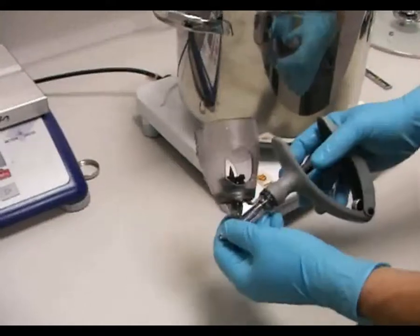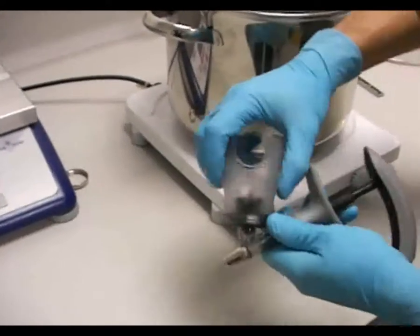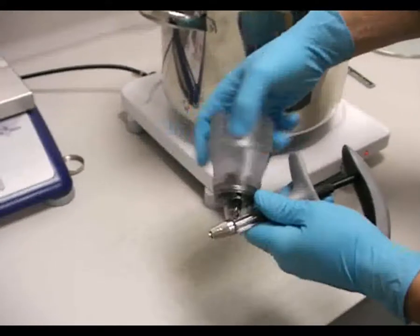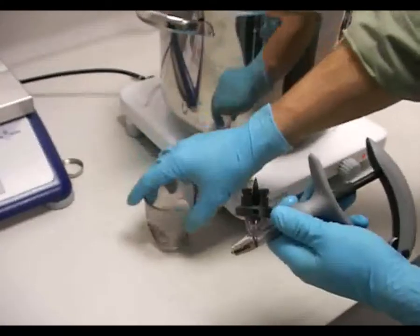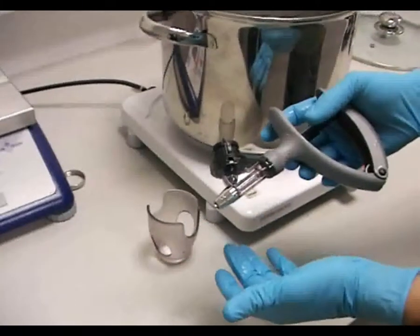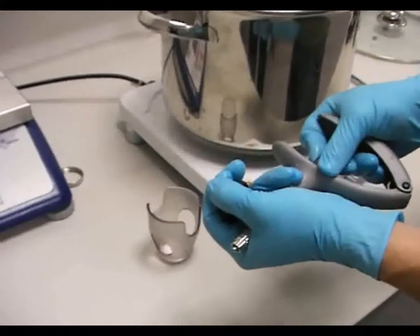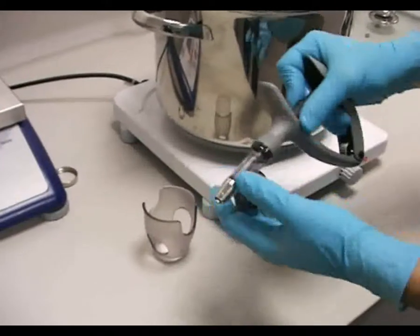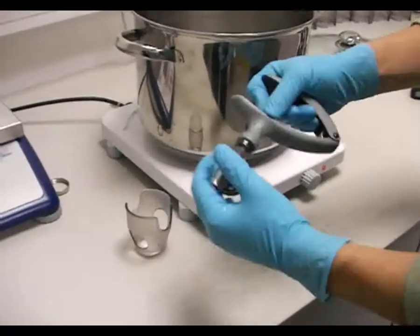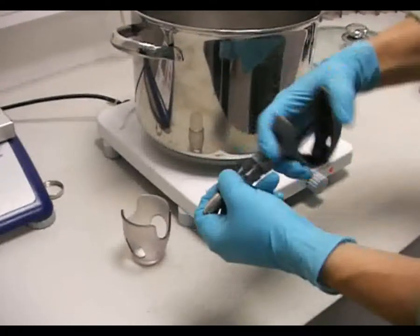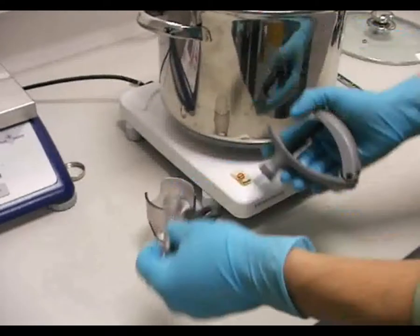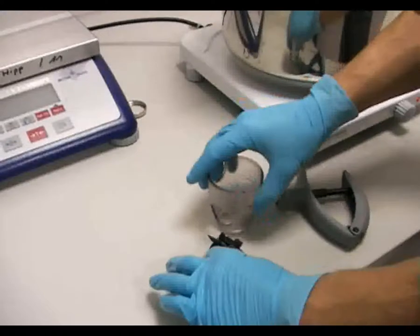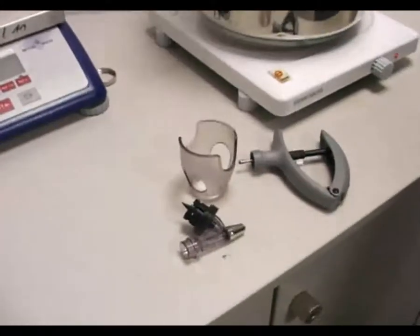Die Spritze kann wie folgt demontiert werden. Arbeitsgang 1: Man schraubt den Korb vom Flaschenhalter durch eine Linksdrehung ab. Gleichermaßen kann der Zylinder mit Metallkanülenansatz vom Griff durch eine Linksdrehung abgeschraubt werden. Die Spritze ist nun in ihre gesamten drei Teile zerlegt.